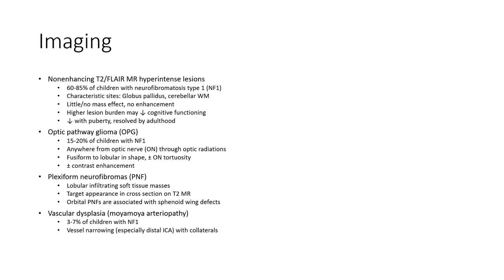Vascular dysplasia, including moyamoya arteriopathy, occurs in 3 to 7% of children with neurofibromatosis type 1, with associated vascular narrowing and collateral formation.